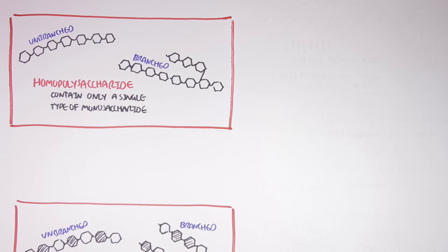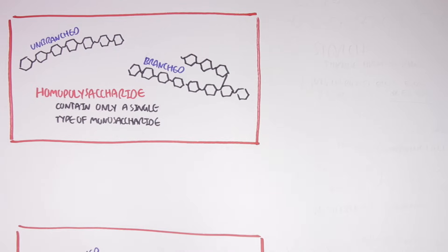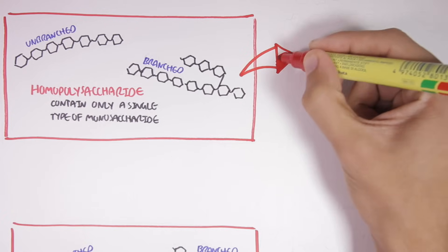It's important to understand that the polysaccharides being drawn here are very small representations. In reality, polysaccharides contain thousands of monosaccharides linked together. In this section, we will focus on homopolysaccharides, because they serve as storage forms of monosaccharides in both humans, plants, and even bacteria — making them very important.